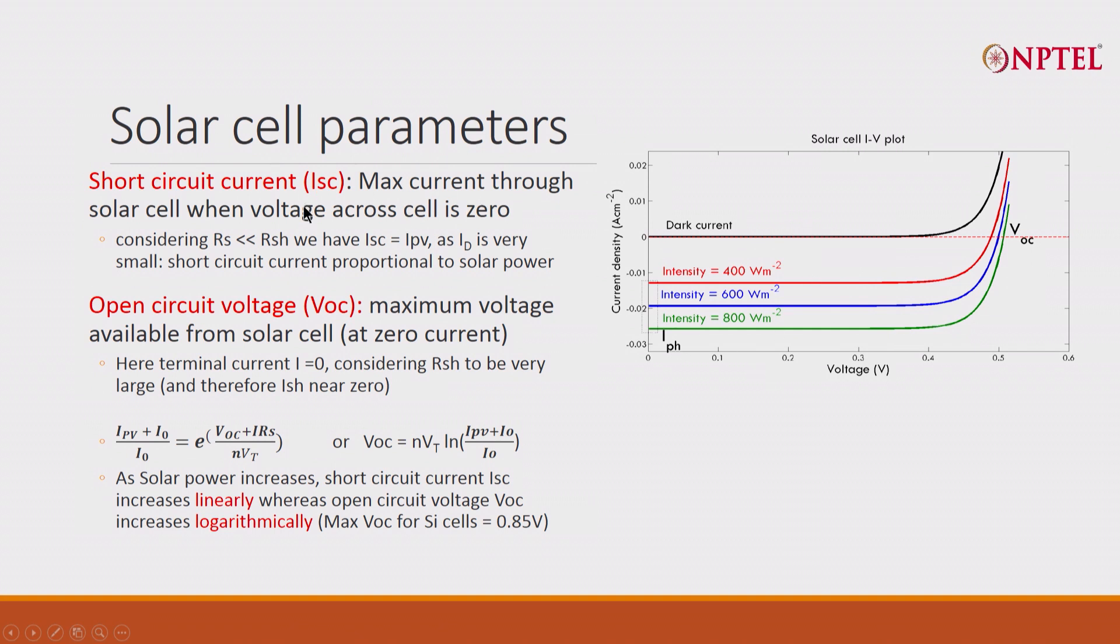The two important parameters: short circuit current. Now, short circuit current, maximum current when the cell has zero voltage, zero voltage. So this is the maximum current.